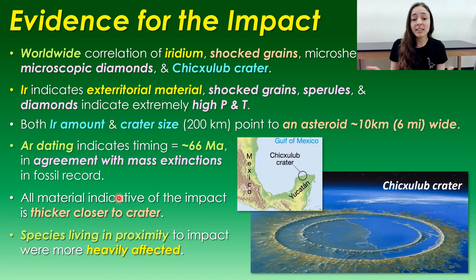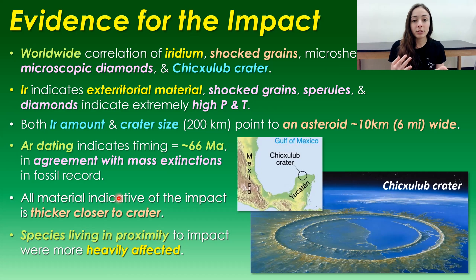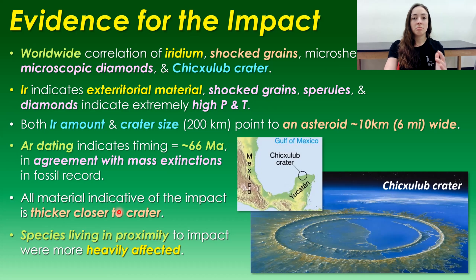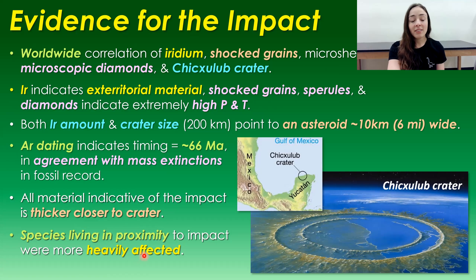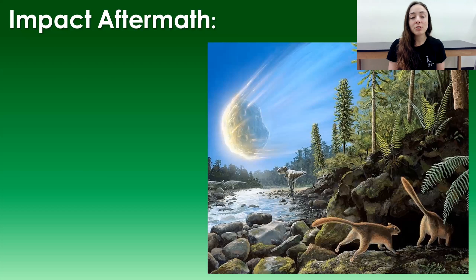Additionally, material indicative of the impact — like microspherials, microscopic diamonds, and shocked grains — are thicker in their deposits closer to the crater, indicating where the pressure and temperature took place at the crater site. Species living in proximity to the impact location were more heavily devastated by this mass extinction event, but it was really the aftermath of the impact that caused most of the mass extinctions.